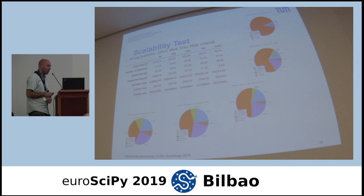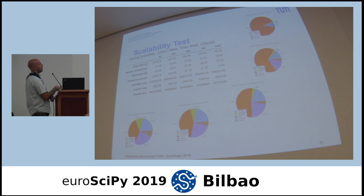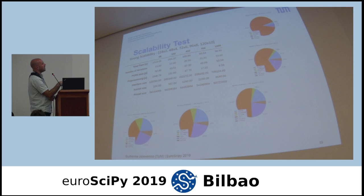However, when we reach around 1,200 MPI processes, we cannot scale anymore and time starts increasing, because global communication dominates. Looking at the pie charts, the global communication portion becomes so large relative to matrix multiplication that it prevents further scaling.